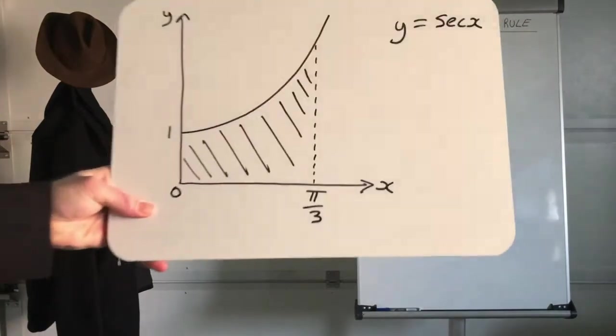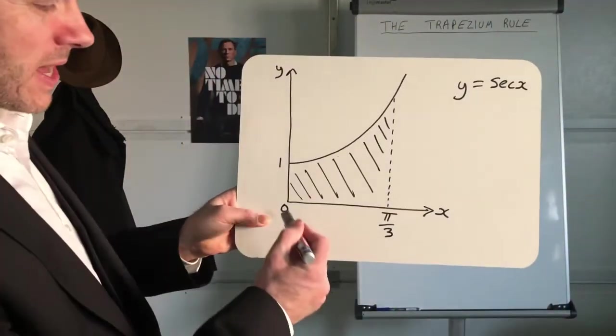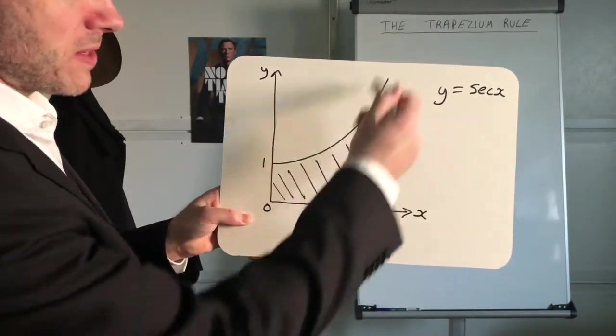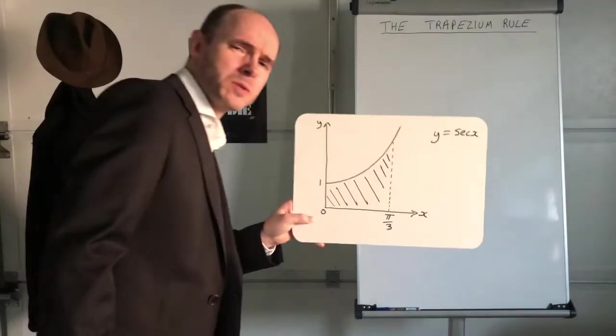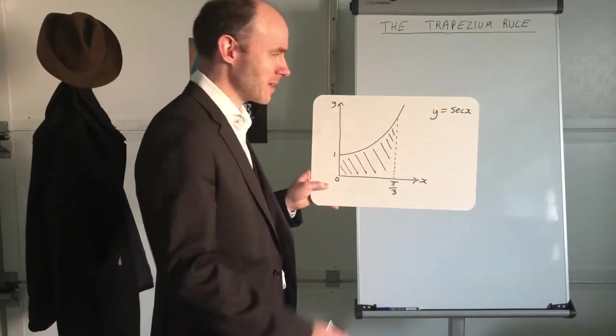I've just put this up in advance so you just have a quick look at it now. Suppose you need to find the area between x is 0 and pi over 3, bounded between the x-axis and this graph, and you know that the equation is y equals sec x.